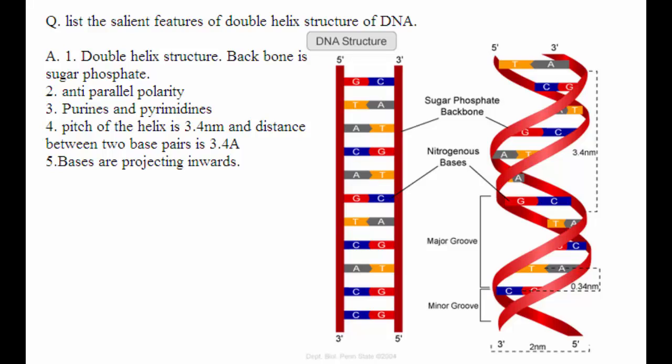List the salient features of the double helix structure of DNA. The double helix structure is made of two polynucleotide chains, and the backbone is constituted by sugar phosphate.